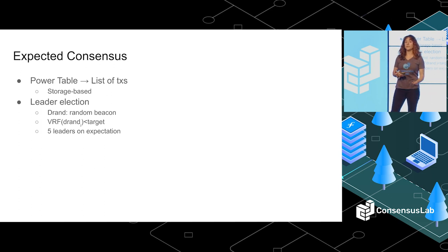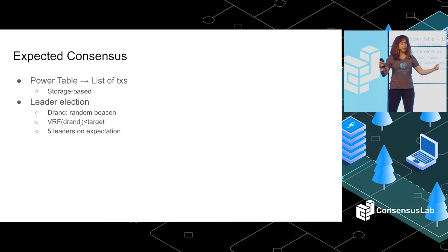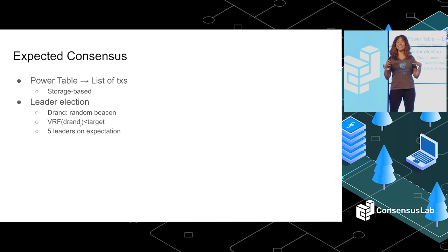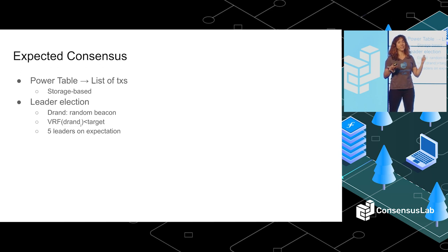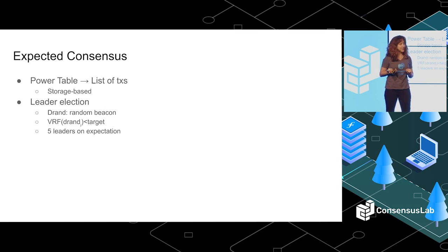One difference between expected consensus — which we abbreviate as EC — and other consensus protocols like longest-chain protocols, is that in EC, on expectation, five leaders are elected in each round. There could be more, there could be less, but on expectation that's five. That's different from most other protocols where there's only one leader elected at each round.